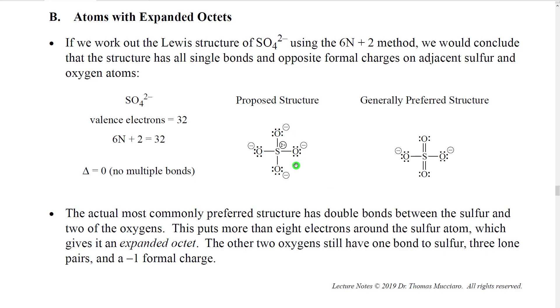So putting sulfur in the middle, oxygen all the way around it, filling in remaining electrons so all the oxygens have complete octets, and then filling in formal charges where each oxygen has a minus formal charge and the sulfur has a plus 2 formal charge. We end up with this structure.